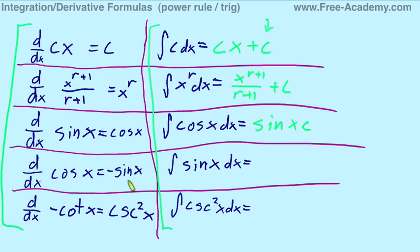Derivative of cosine equals negative sine. The integral of sine equals negative cosine. Notice that this makes sense because if we did the integral of negative sine, we would have gotten positive cosine. So what we did there is switch around the signs, which is perfectly legit.